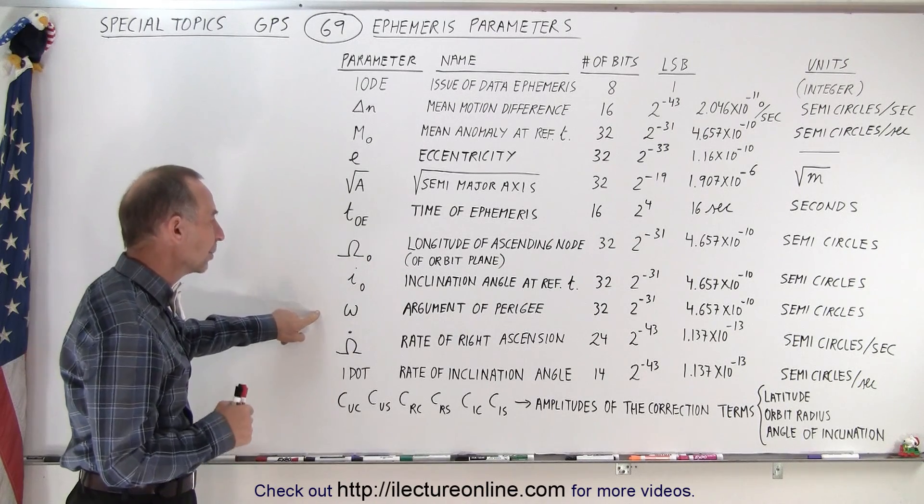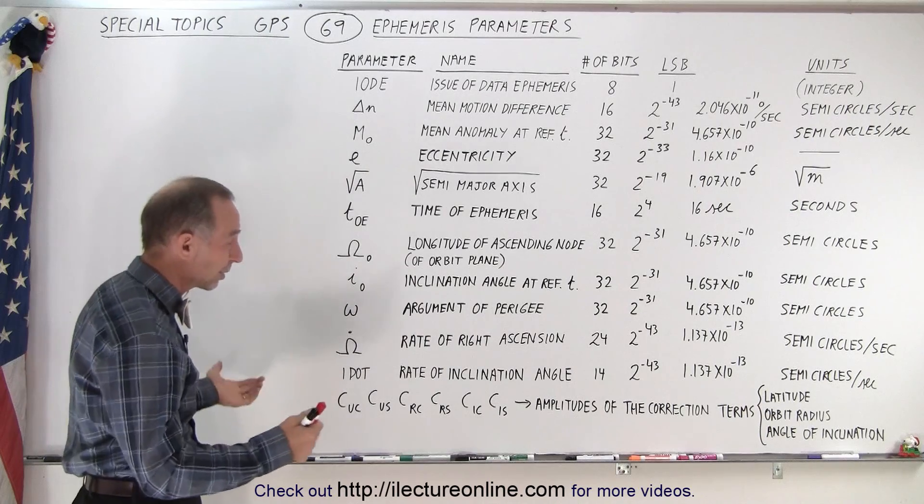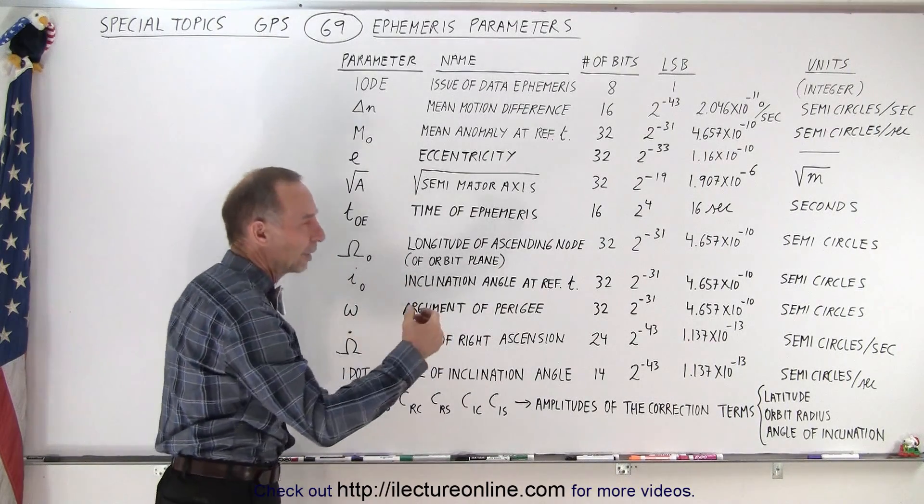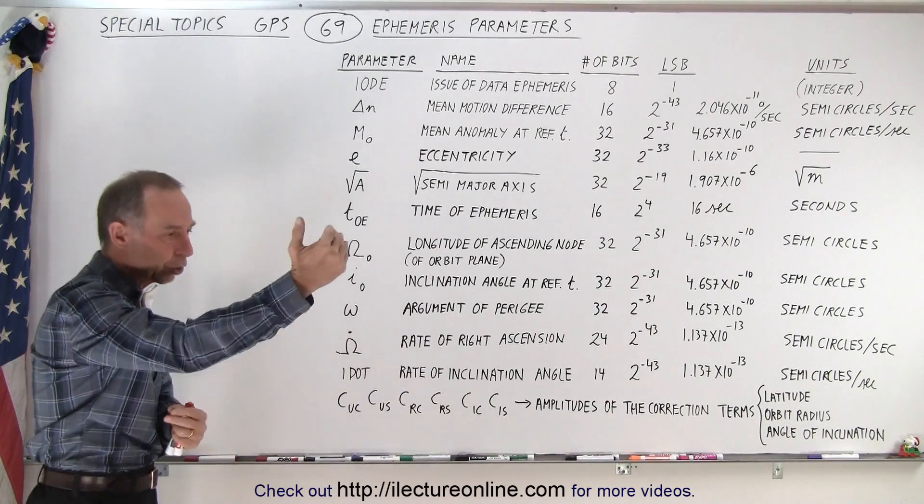The next one is the argument of perigee. That's one of those names where you wonder, what does that mean? Perigee is the point of the satellite orbit where it's closest to the Earth.